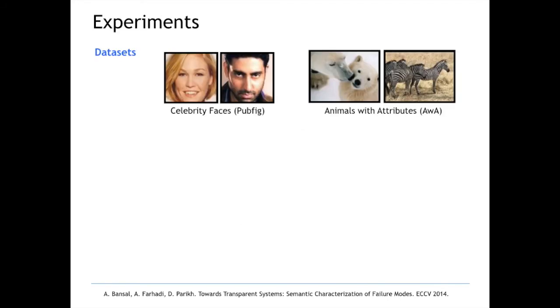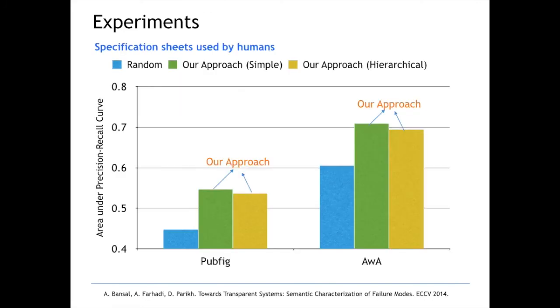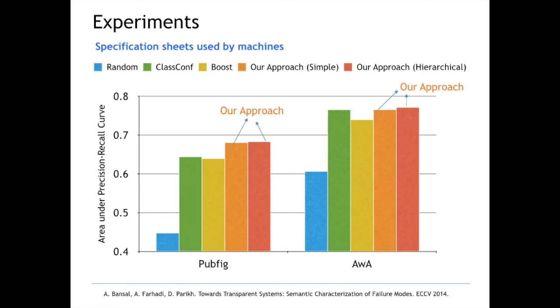We evaluated our approach on two datasets: faces and animals. A generated specification sheet can be used by users or by the machine to predict oncoming failure. We found that our approach outperformed several strong baselines.